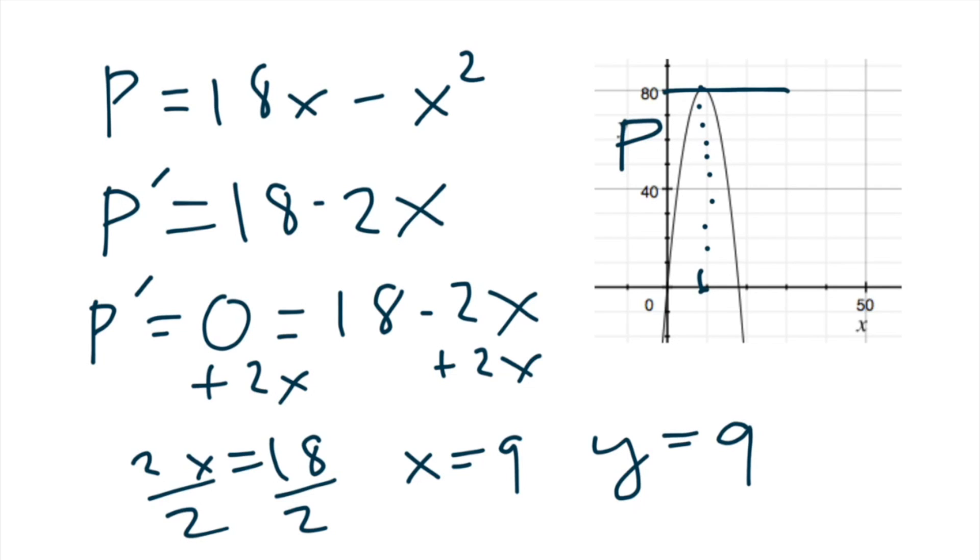So, oh, and you can see what would the max product be then? Okay, because sometimes the question would ask that instead of asking for the two numbers, the maximum product would be 81. So that pretty much wraps up this solution.